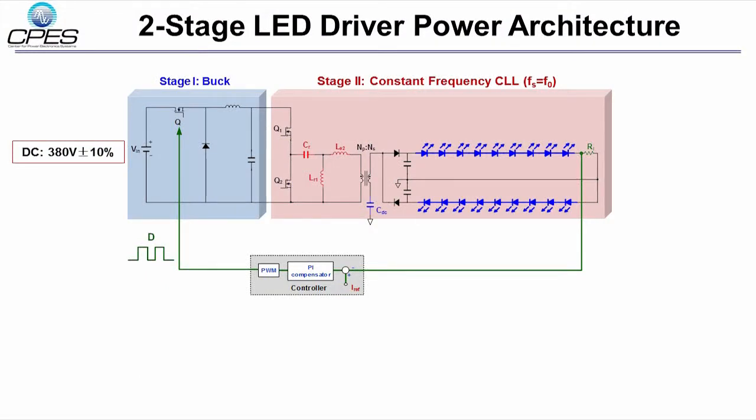Here is the power architecture of this two-stage LED driver. The first stage is a buck converter and the second stage is a CLL resonant converter. The current of one specific LED string is sensed for feedback control to tune the bus voltage.